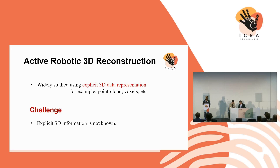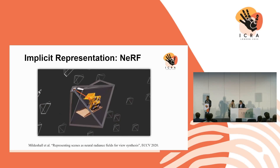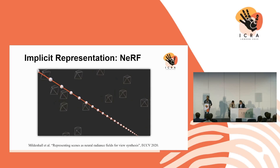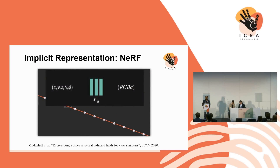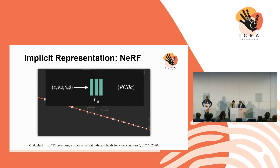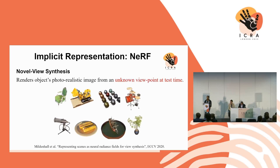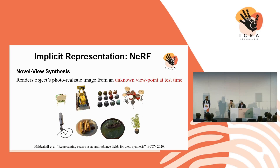Neural radiance fields have shown some really powerful representation capabilities. For those not familiar with NeRF, it's a simple multi-layer perceptron modeling. It back-projects rays per pixel into the scene space, samples points along the ray, and renders color and volume density for each pixel across all views. They use a simple color rendering loss and alpha composition for view synthesis, enabling synthesis of realistic images at test time without knowing how the scene will look from that viewpoint.